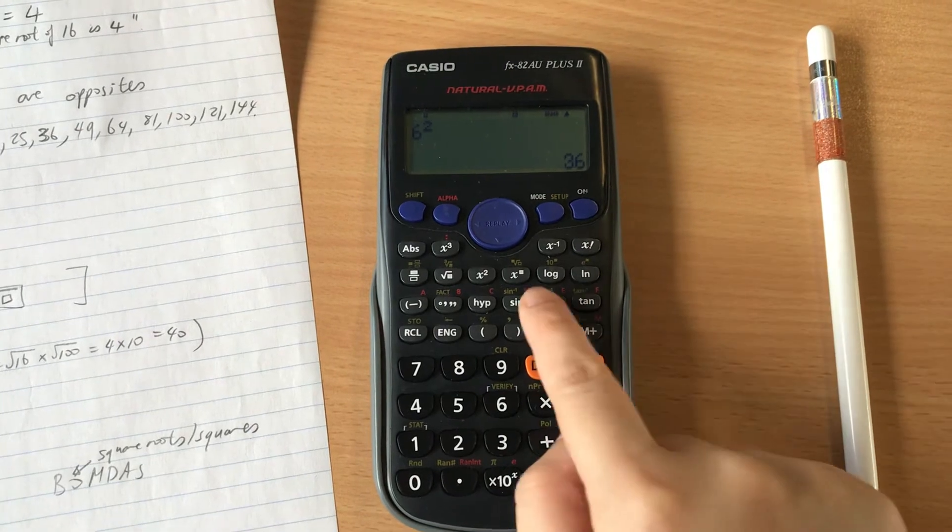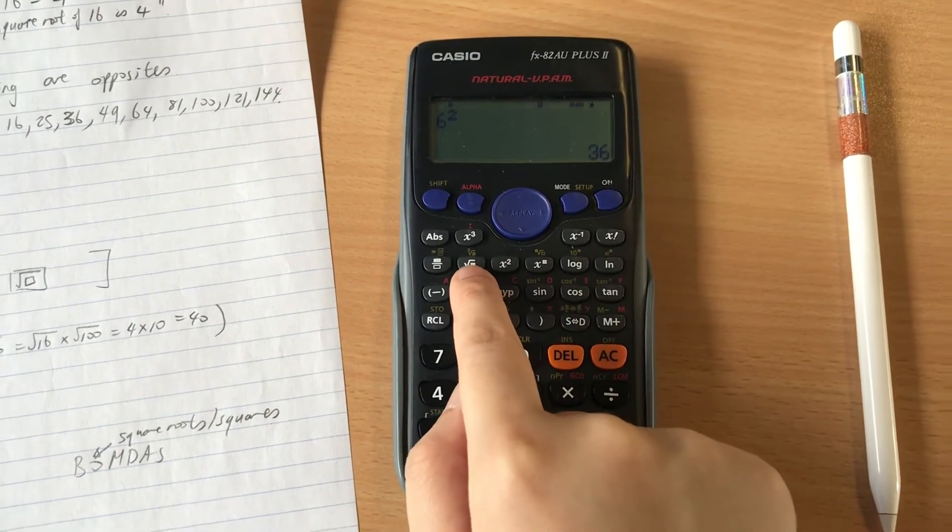What about the square roots? Well right next to the x squared is square root because they're opposites of each other.